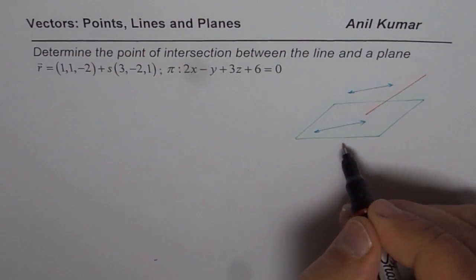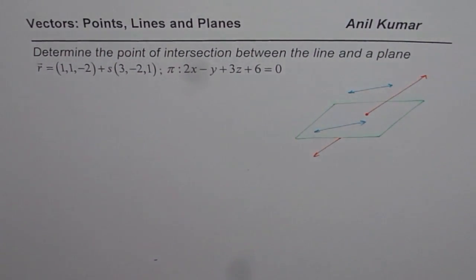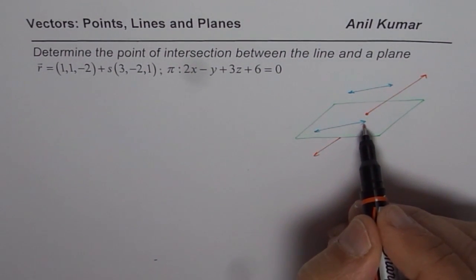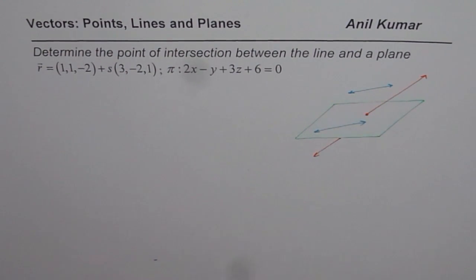So those are the different scenarios. Or it could go kind of like this. Do you see that? So that will result into one point of intersection. This results into infinite points of intersection. And in this case, there will not be any point of intersection.